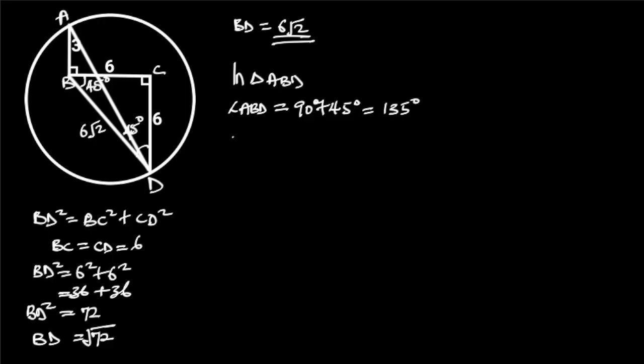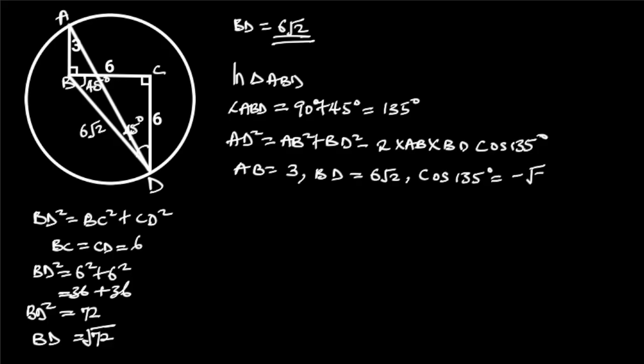Going further, we are going to find AD using cosine rule. From cosine rule, AD squared is equal to AB squared plus BD squared minus 2 times AB times BD times cos 135 degrees. AB is equal to 3, BD is equal to 6 root 2, and cos 135 degrees is equal to minus root 2 over 2. Substituting these values in the formula will give us AD squared is equal to 3 squared plus 6 root 2 squared minus 2 times 3 times 6 root 2 times minus root 2 over 2.